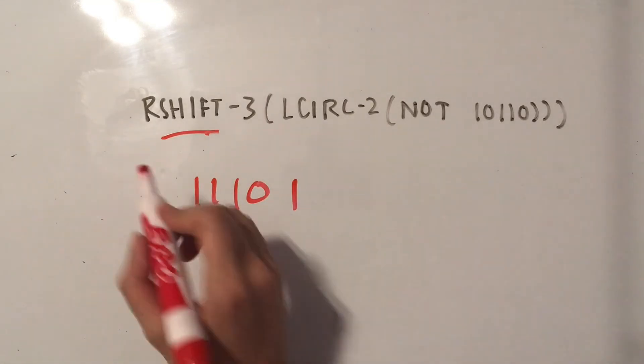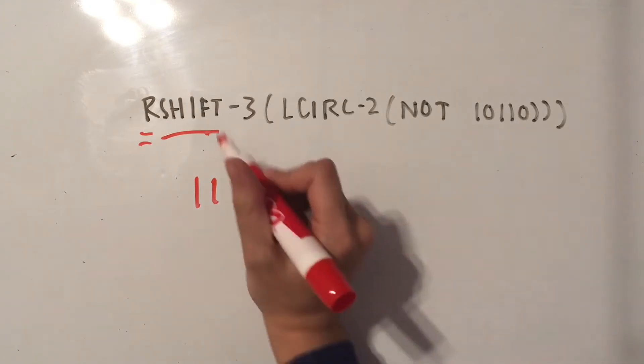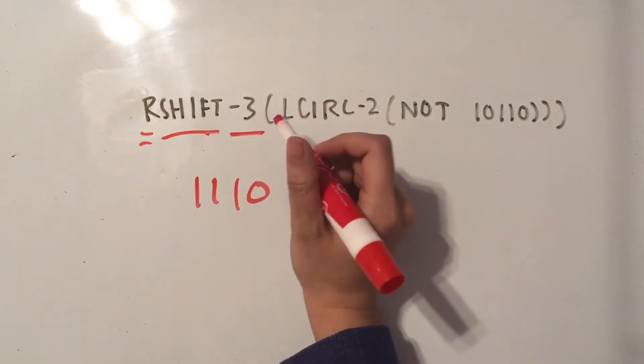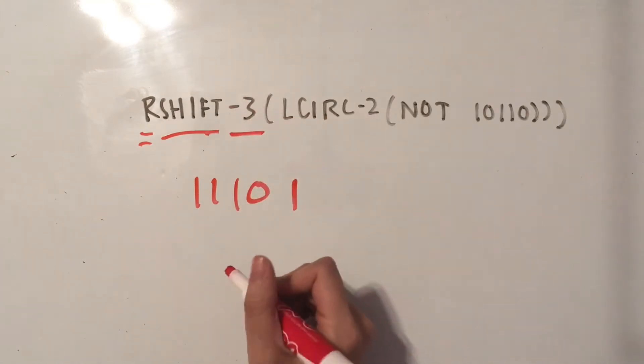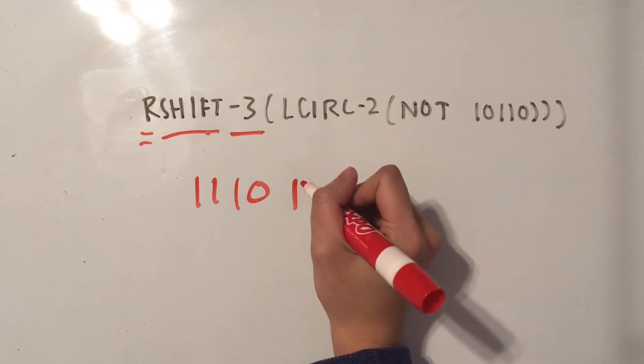Then we look at whether it says R or L. If it's R, then you start on the right, and then we look at dash 3, or a dash number. So since this says 3, we're going to start on the right and then take out the first 3.